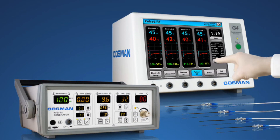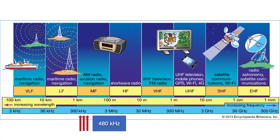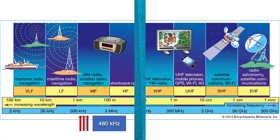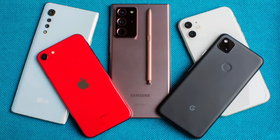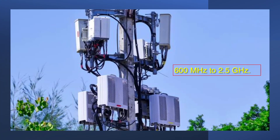I am using an RF generator creating a 480 kHz frequency, as you can watch. On the other hand, the mobile phone uses a different range of frequencies. For example, 4G LTE technologies use frequency bands from 600 MHz to 2.5 GHz.